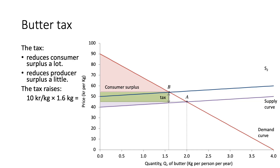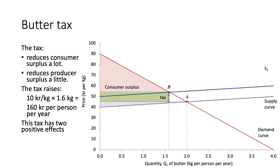The revenue raised by the tax is essentially the area of the green rectangle — with a base of 1.6 kg and an approximately 10 kroner increase, this gives roughly 160 kroner per person per year in revenue. The tax has two positive effects: the green rectangle represents revenue raised, and consumption has been reduced from 2 kg per year to 1.6 kg per year. The intuition is that individuals within the country are now healthier and the government has raised revenue as a result.